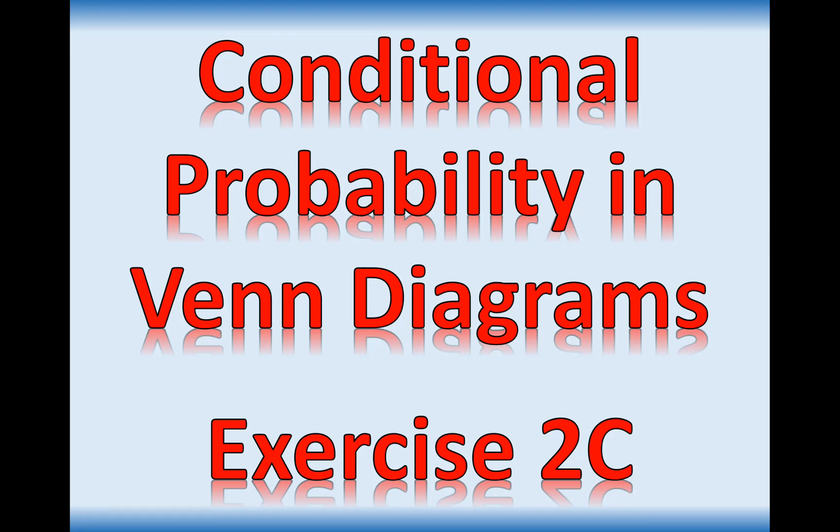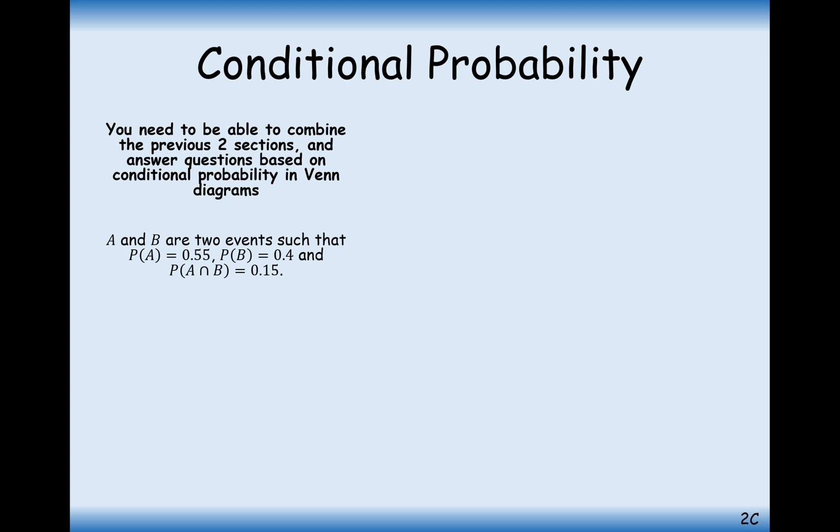Hello there and welcome to this series of videos going through the content of A-level maths. Here we're looking at conditional probability in Venn diagrams, so we can answer questions from exercise 2c. We've been introduced to conditional probability in the previous video, exercise 2b, so let's just see how this applies to a Venn diagram.